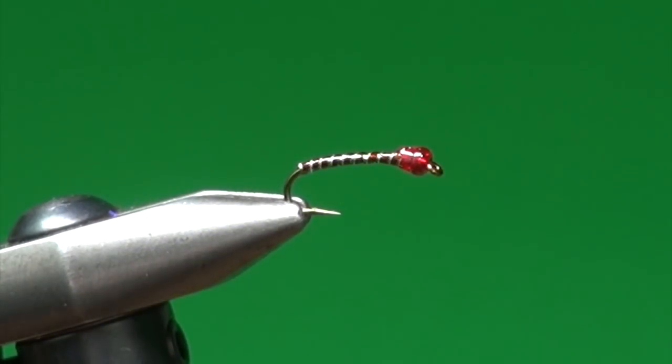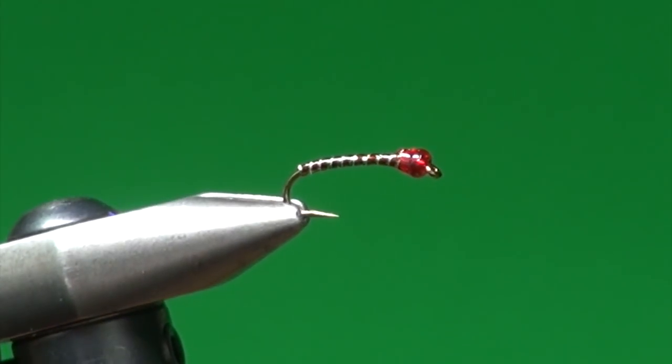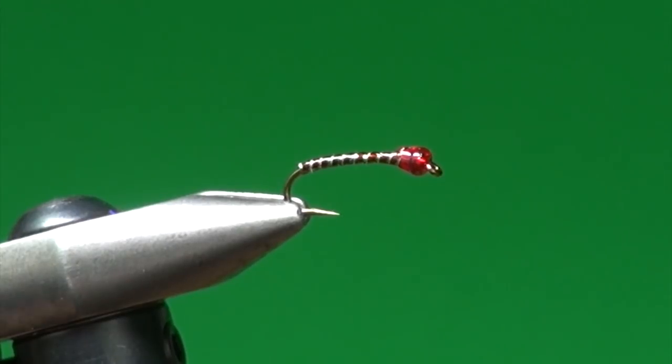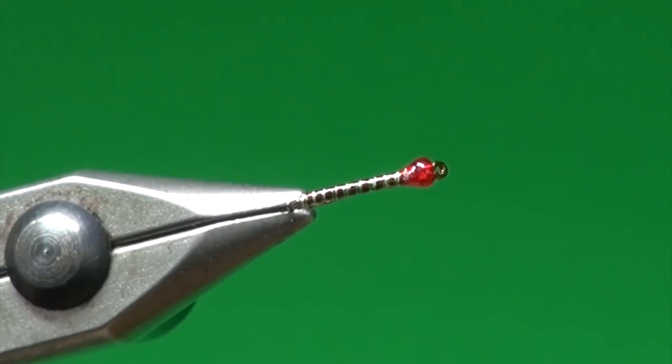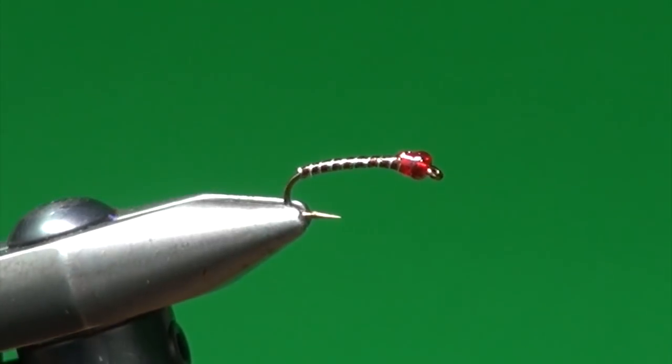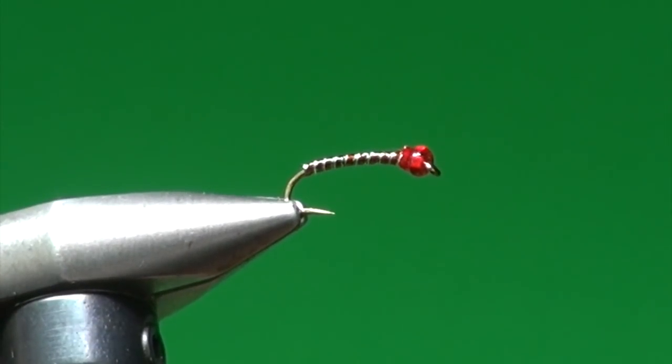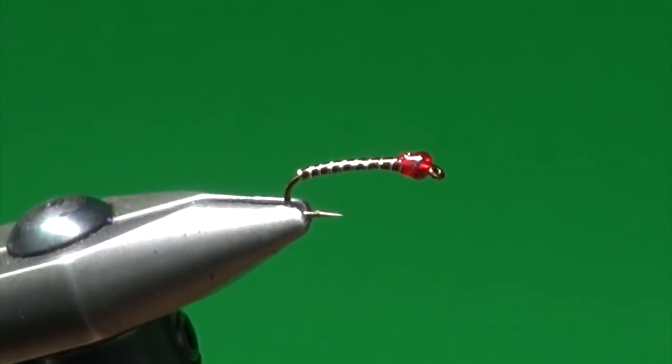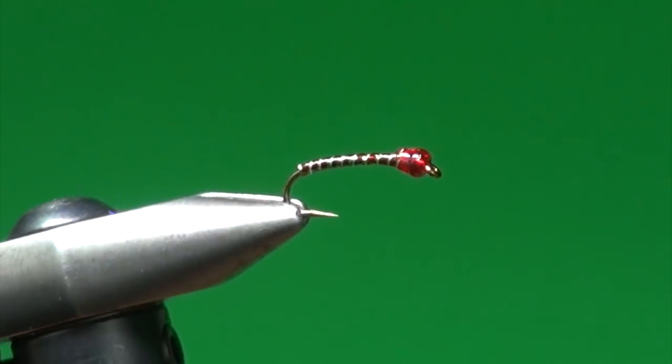And there you have it. Not totally happy with the thread wraps behind the bead but it'll still fish and hunt well. So there you have it. The completed red green chironomid larva. Give that a try the next time you think bloodworm are on the agenda. This mixed coloration. You often see bloodworm with red green coloration particularly in the fall months. As the water becomes more oxygenated. And the chironomid larva do not need to rely on that hemoglobin that they can generate to live in oxygen poor waters. That gives them that distinct red coloration. So there you have it. Add that one to your fly box.